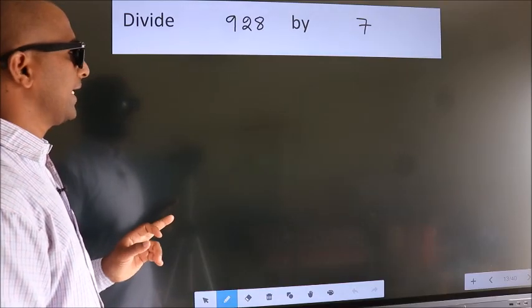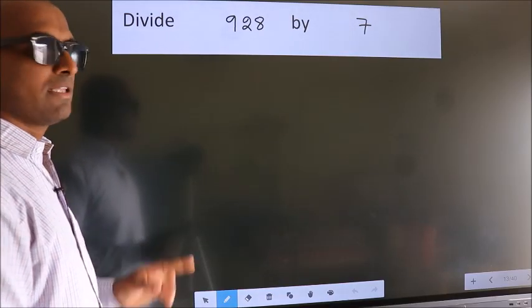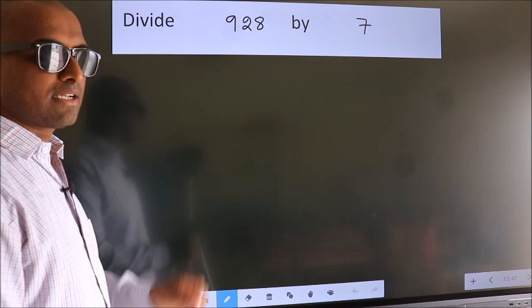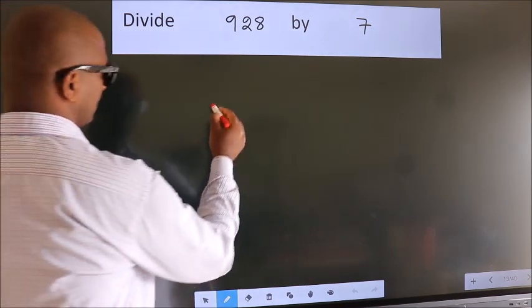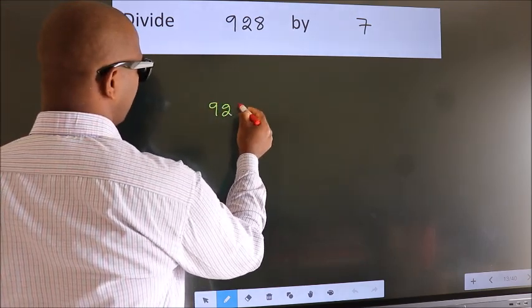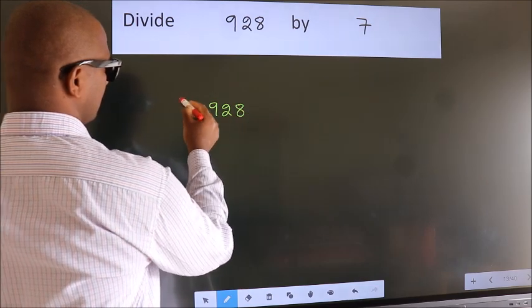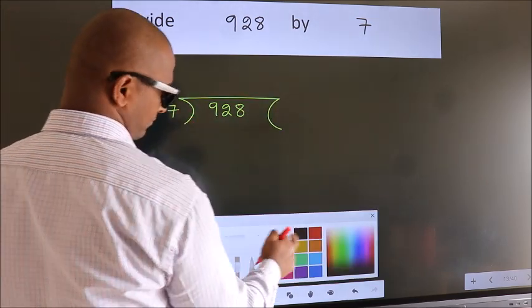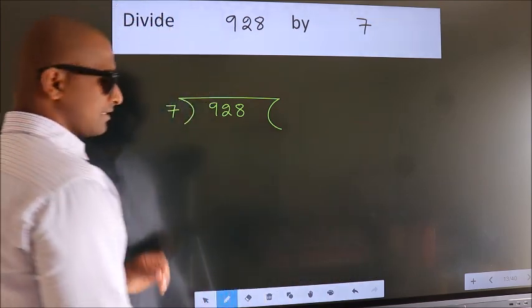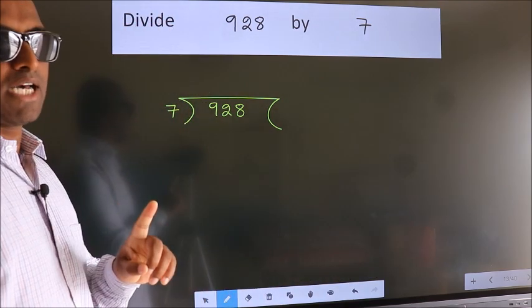Divide 928 by 7. To do this division, we should frame it in this way. 928 here, 7 here. This is your step 1.